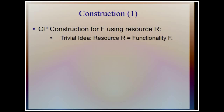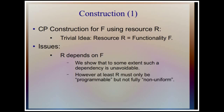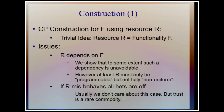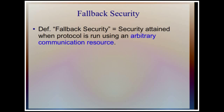Now we have our definition — can we realize it? One way is to simply use functionality F itself, but besides being uninteresting, the real-world resource depends completely on the ideal resource. It turns out this dependency is unavoidable to some extent, but it is computable by a deterministic algorithm. Another criticism: if R misbehaves and isn't actually acting as F, you don't get anything. To capture what else we could do, we define the notion of fallback security.